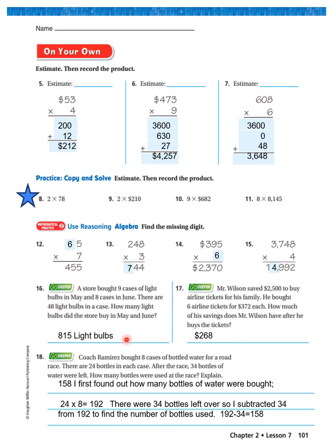All right, it says, Coach Ramirez bought eight cases of bottled water for a road race. There are 24 bottles in each case. After the race, 34 bottles of water were left. How many bottles were used at the race and explain? Well, the answer is 158. So I first found out how many bottles of water he bought, and that would be 24 times eight, and that equals 192. Remember, I'm going to find that out using the distributive property. There were 34 bottles left over, so I subtracted 34 from 192 to find the number of bottles used. So 192 minus 34 equals 158.